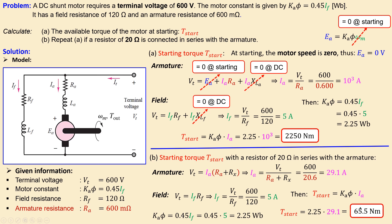What we learn from this example is that adding a larger armature resistance decreases the starting torque significantly. In order to start a motor you require a minimum starting torque, and having a larger armature resistance may prevent the motor from starting. This is example number five, showing the effect of an additional element in the armature circuit on the starting torque. If you have any questions please let me know — thanks and see you next time.